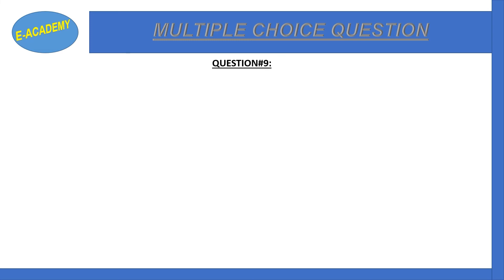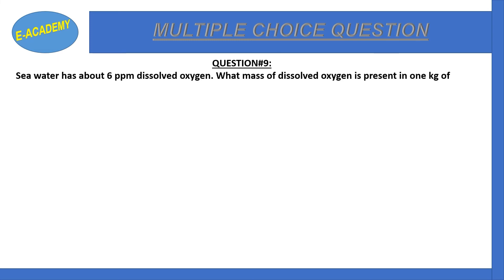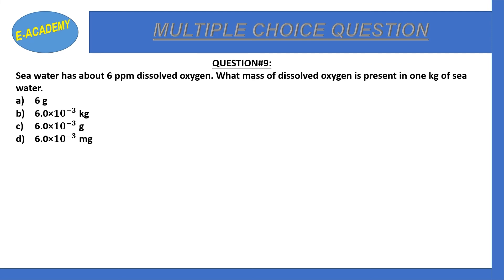Question number 9: 10 kg of sea water has about 6 parts per million dissolved oxygen. What mass of dissolved oxygen is present in 1 kg of sea water? Options: a) 6 grams, b) 6.0×10⁻³ grams, c) 6.0×10⁻³ grams, d) 6.0×10⁻³ milligrams. Correct option is c) 6.0×10⁻³ grams.